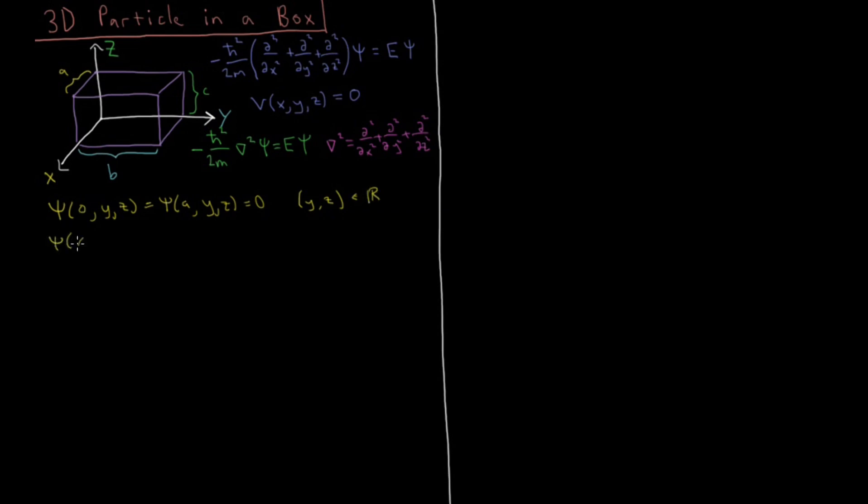And similarly, we have this in the other two dimensions as well. We have it when y equals zero and when y equals b. We have it when z equals zero and when z equals c. Again, for the cases of all x and z being real, all x and y being real. Okay, so what does this tell us?